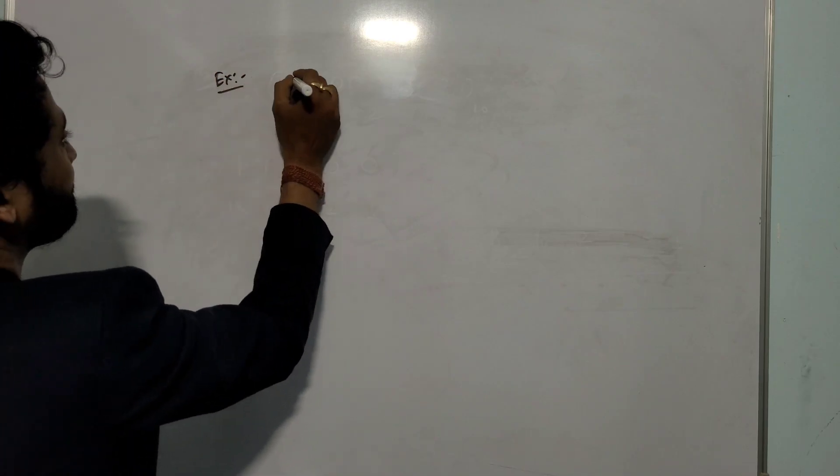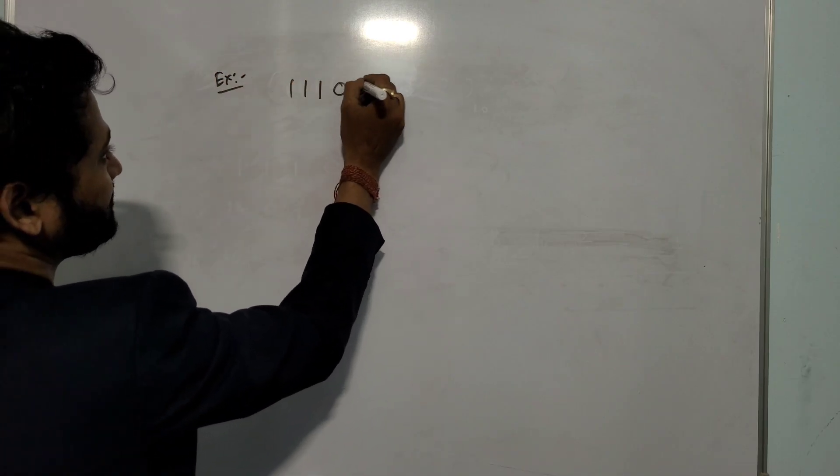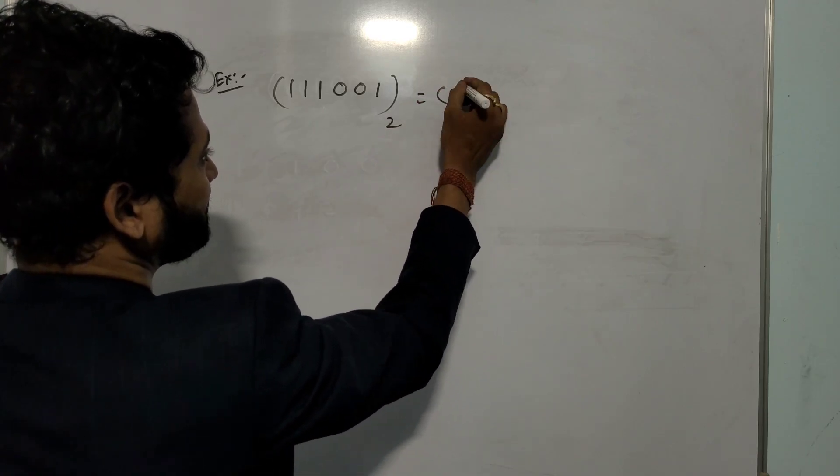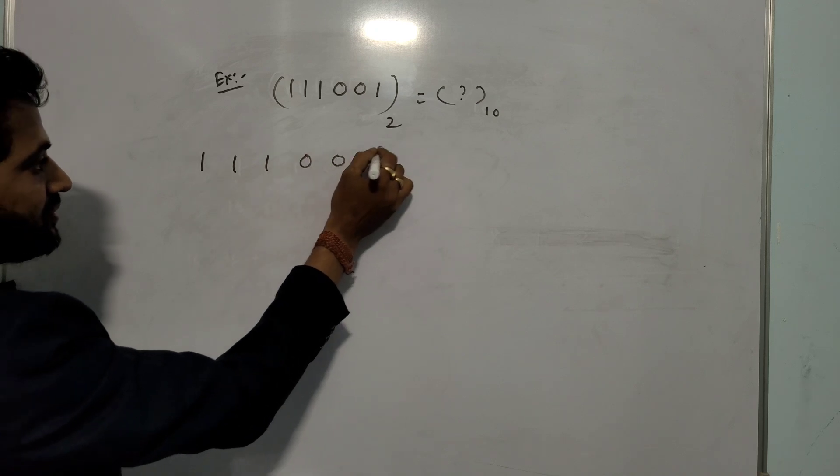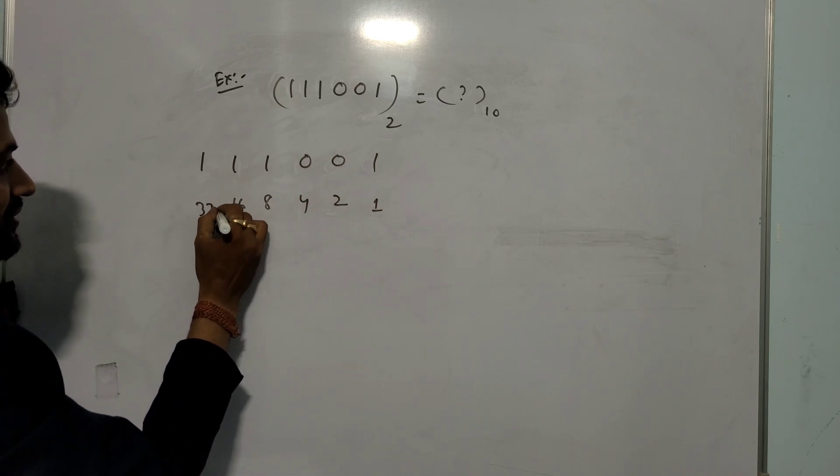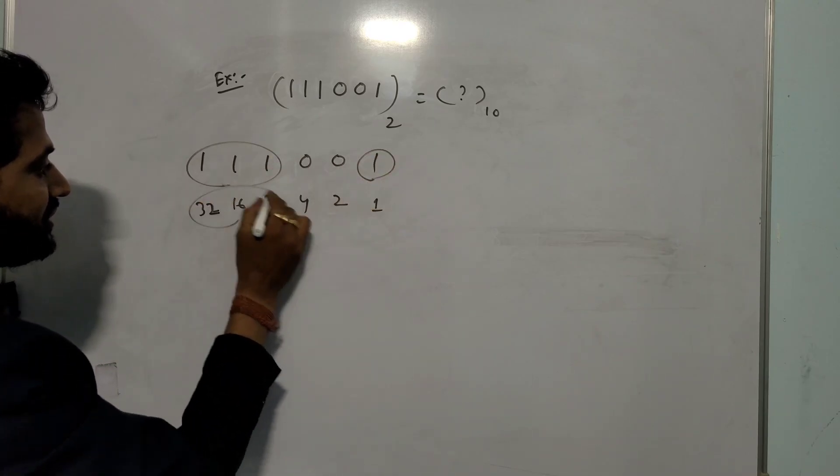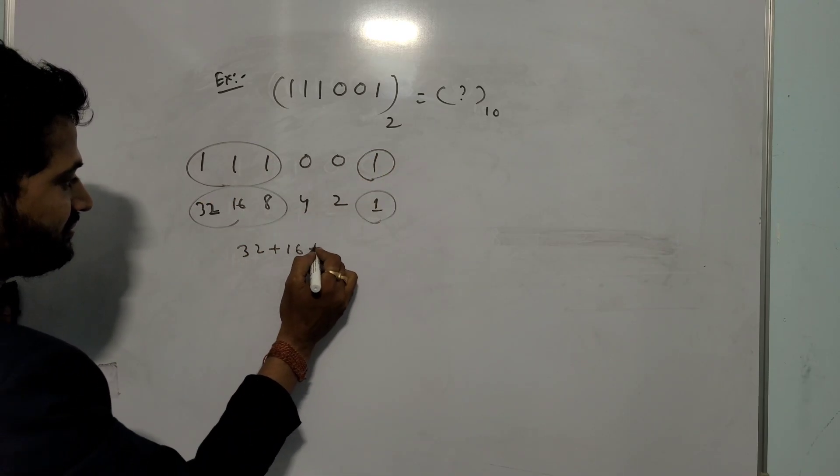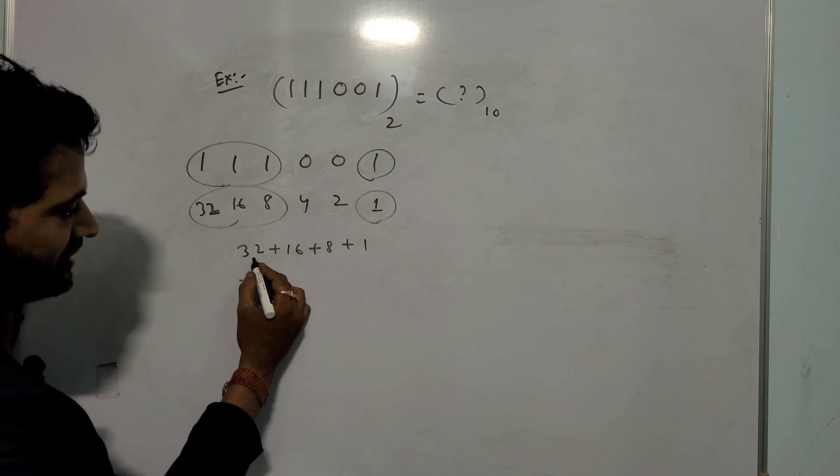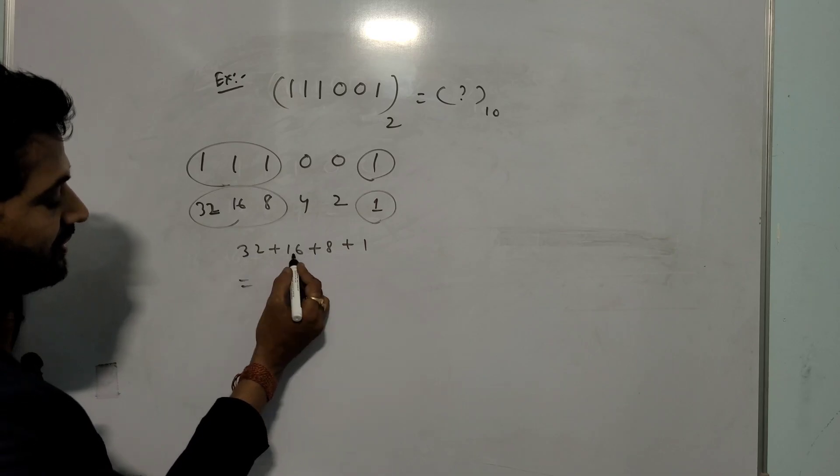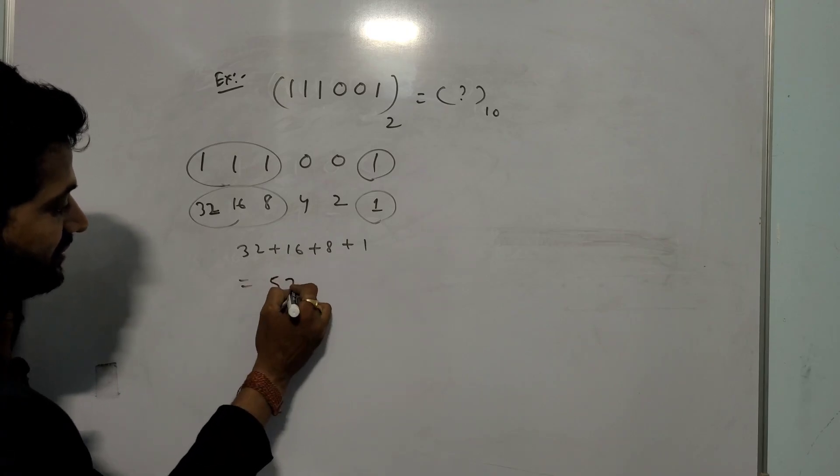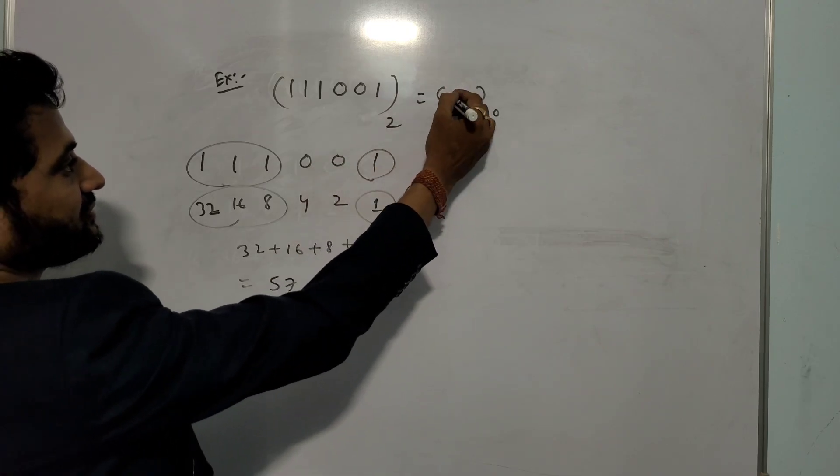Another example is 111001. What is the corresponding decimal value? See 111001: 1, 2, 4, 8, 16, 32. You take this one and this one. Corresponding value is 32 plus 16 plus 8 plus 1. I think 57. 32 plus 16 is 48, 49, 57. The answer is 57.